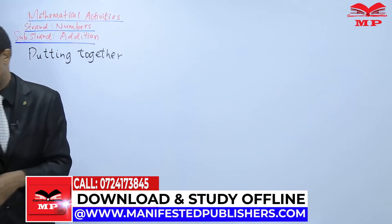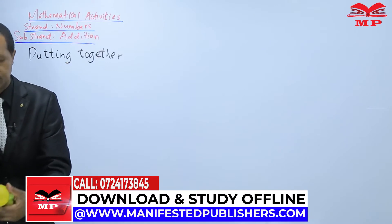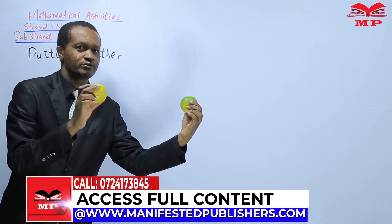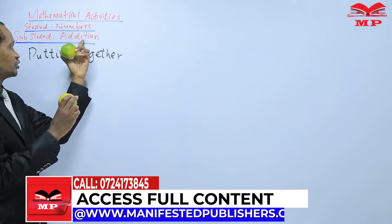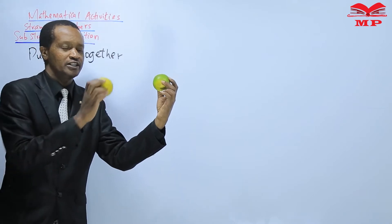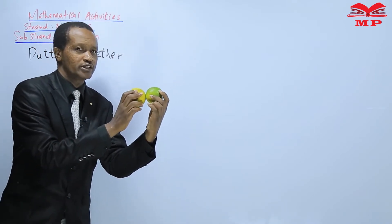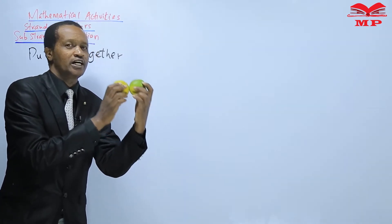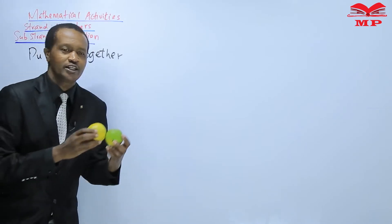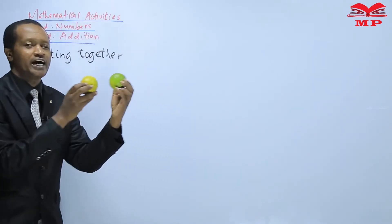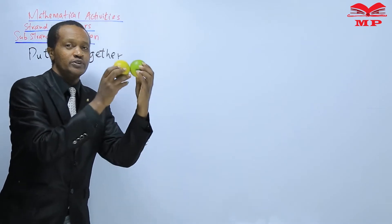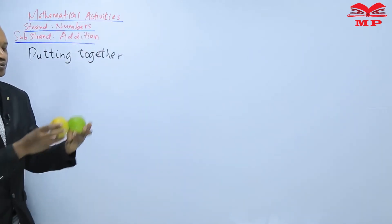I also gave an example of the oranges. Two oranges. I have one orange in my left hand, another orange in my right hand. Addition means putting together. So when I take this orange and this other orange and put them together, then I say I have done addition. I have added the two oranges by putting them together.